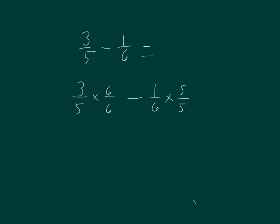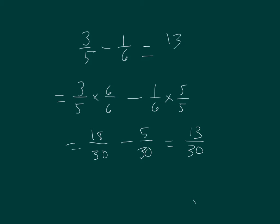Three times six is eighteen. Five times six is thirty. We're subtracting. One times five is five. Six times five is thirty. So I have eighteen-thirtieths minus five-thirtieths. The denominator stays the same, and eighteen minus five is thirteen.